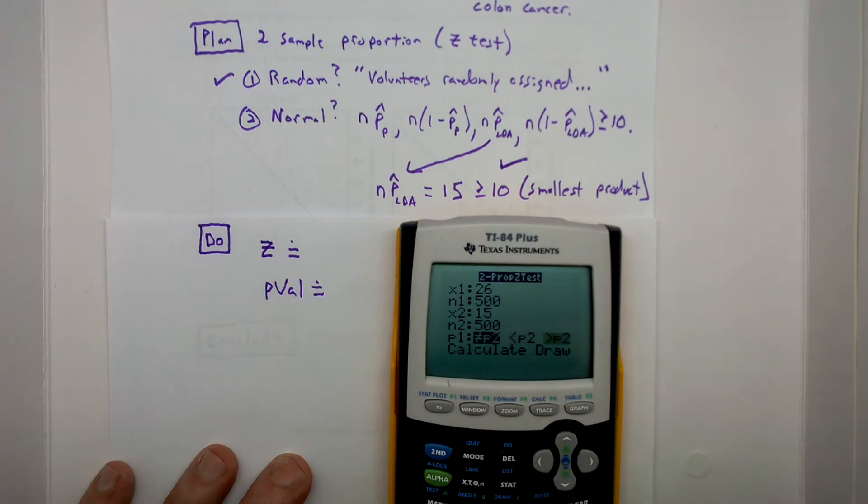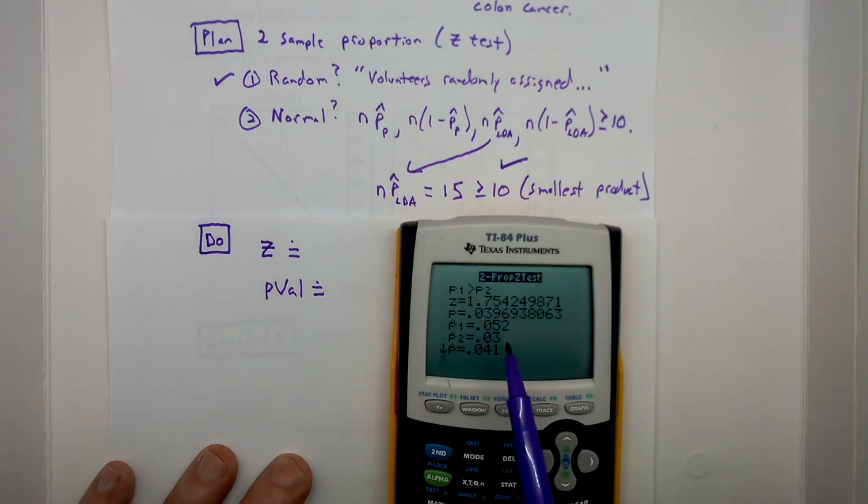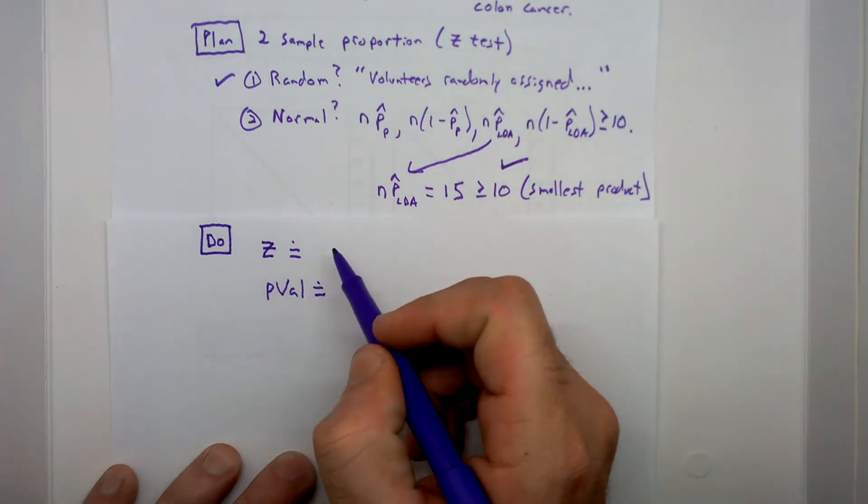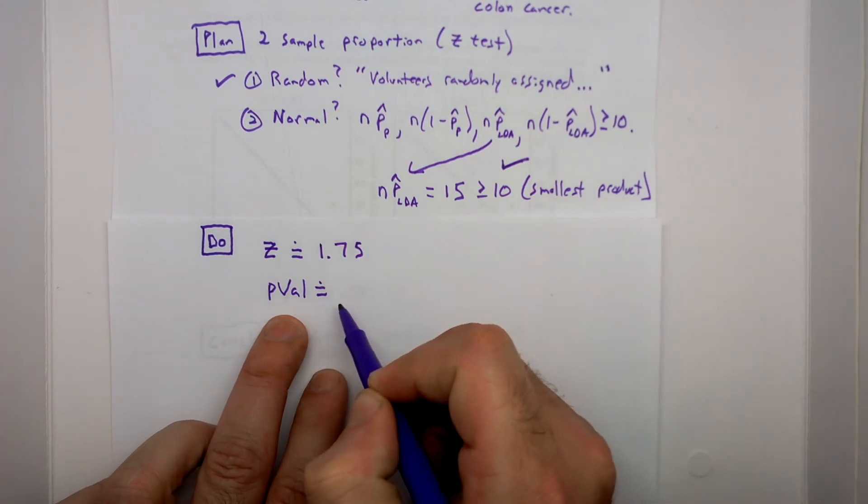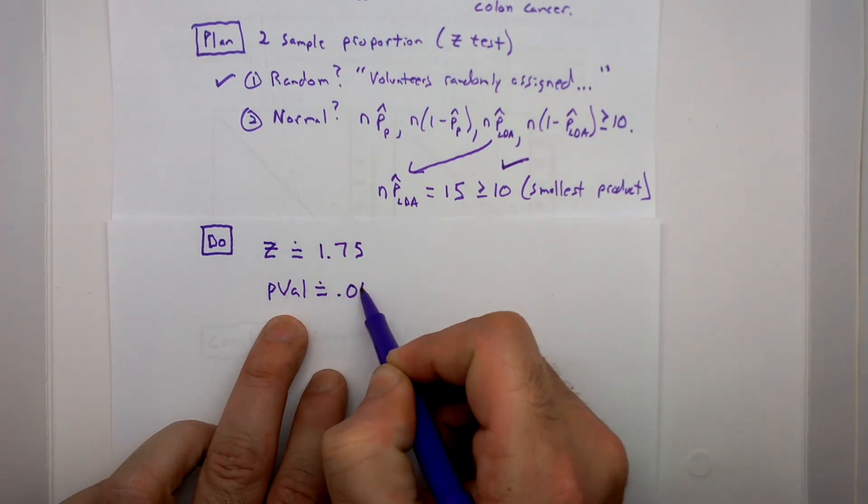We said greater than. And again, you could have just as easily flipped these and made low-dose aspirin on the left-hand side. In which case, you would have had a less than. The only difference would be the sign of your test statistic. Our test stat is approximately 1.75, and our p-value is approximately .04. Test stat, 1.75, p-value .04.